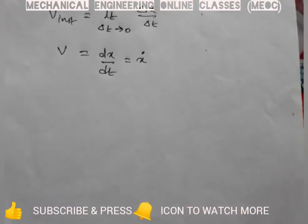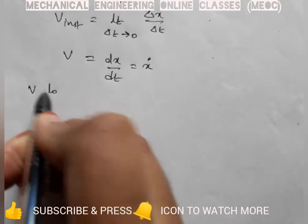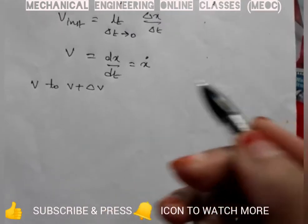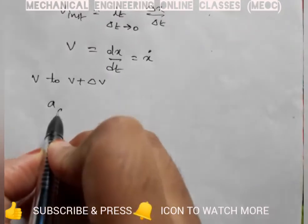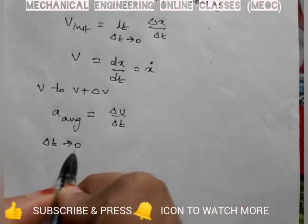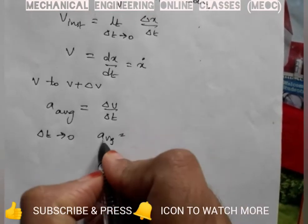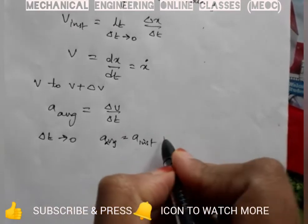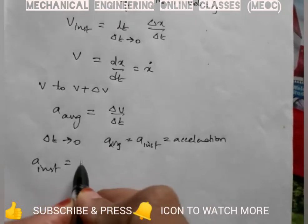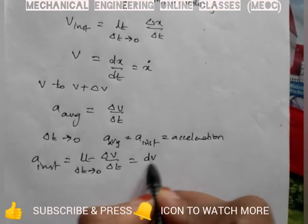Similarly, acceleration is the time rate of change of velocity. If velocity is changing from v to v plus delta v as the particle moves from P to P1, then the average acceleration over delta t time is a average equals delta v by delta t. As delta t tends to 0, average acceleration becomes instantaneous acceleration, which is simply called acceleration.